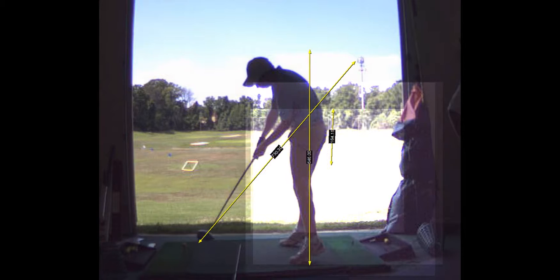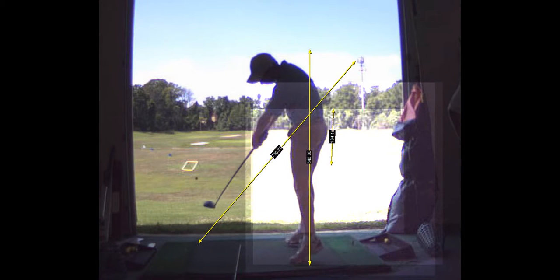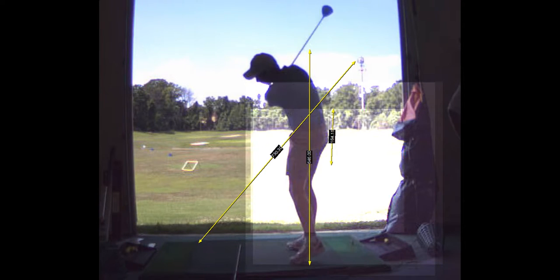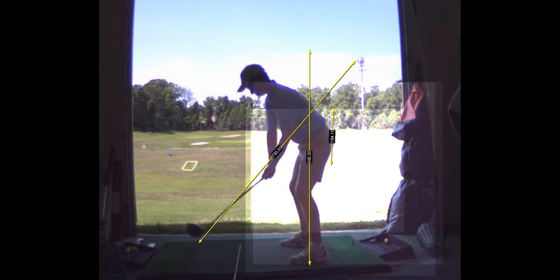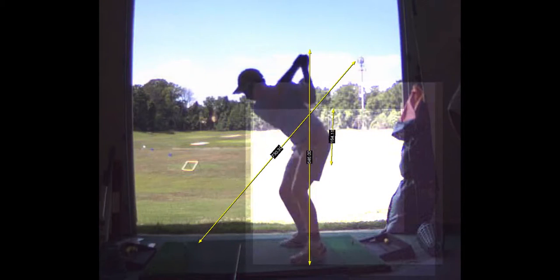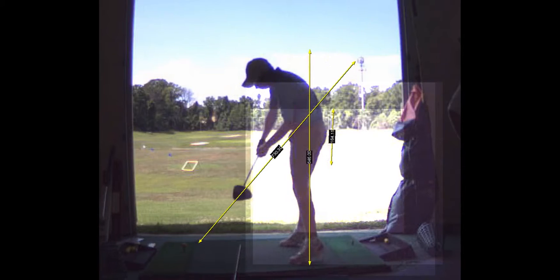Clear that front hip and shoulder. Get that club to exit a little more under the shoulder line. Just a little bit right there.